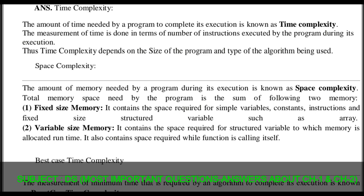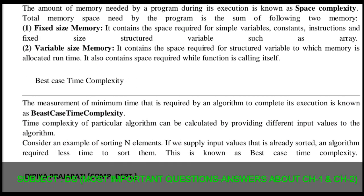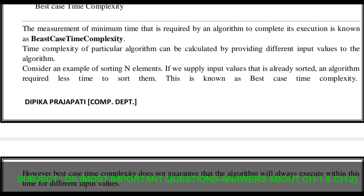Space complexity depends on two types of memory: fixed size memory and variable size memory. Fixed size memory contains the space required for simple variables, constants, instructions, and fixed size structure variables such as an array. Variable size memory contains the space required for structure variables to which memory is allocated at runtime, and also contains space required while a function is calling itself.